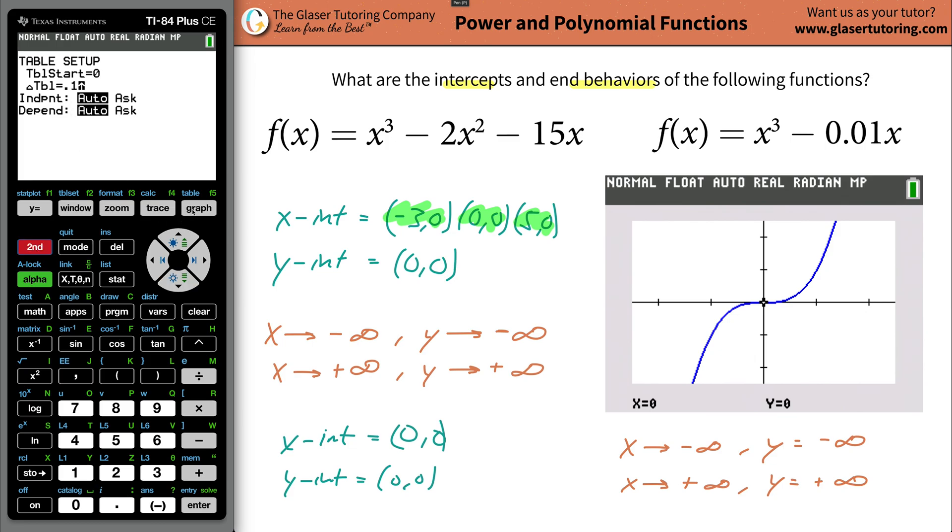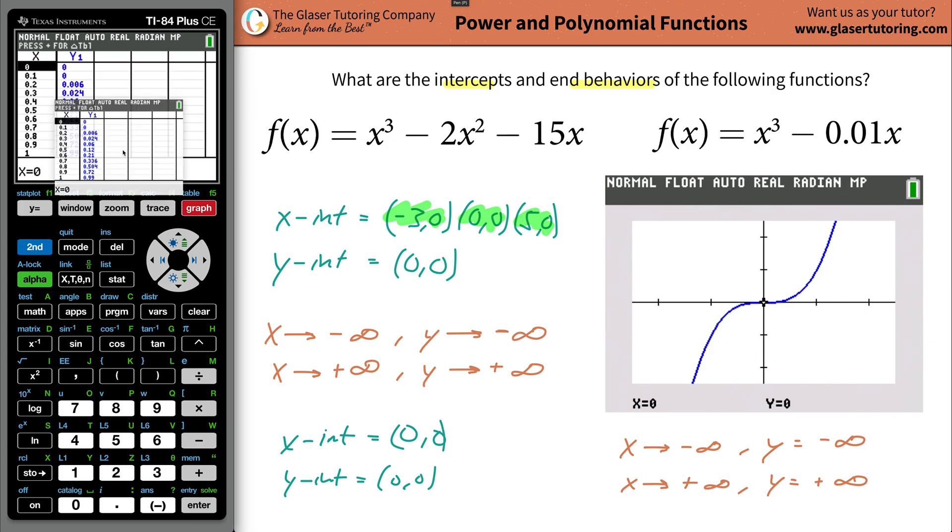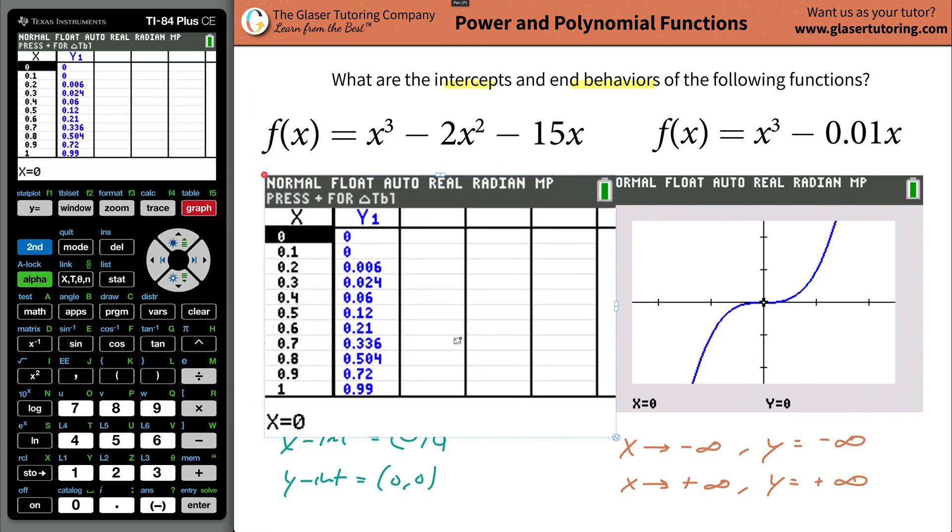Now hit second graph to bring up your table. Now look, notice here how this also, the graph also has a y value of zero. And remember, we said that your x intercepts will be found when y is equal to zero, it has a second x intercept here at point one.